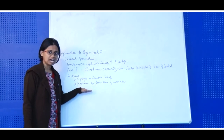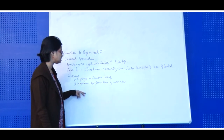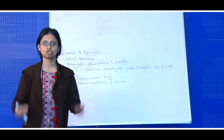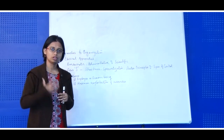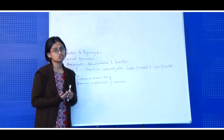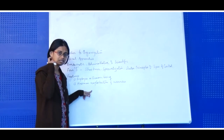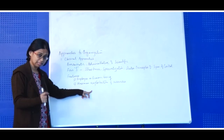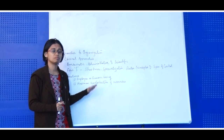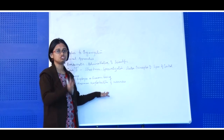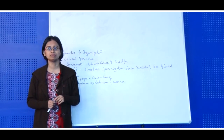Along with that, the next level is the maximum exploitation of resources. When we have all the resources at hand, we plan on exploiting all those resources to the maximum level in order to achieve the goal. Here again, employees are treated as particular resources to the organization and are maximum utilized or exploited in order to generate the particular goal or the finished product.